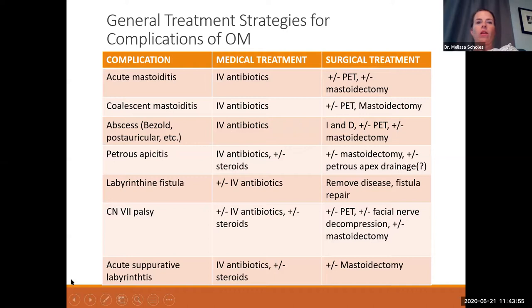Acute suppurative labyrinthitis: these kids are sick — dizzy, vomiting, febrile. We treat with IV antibiotics and steroids to prevent ossification of the labyrinth. I'm more aggressive with these kids: they get an ear tube and probably a cortical mastoidectomy to decrease inflammation as much as possible.